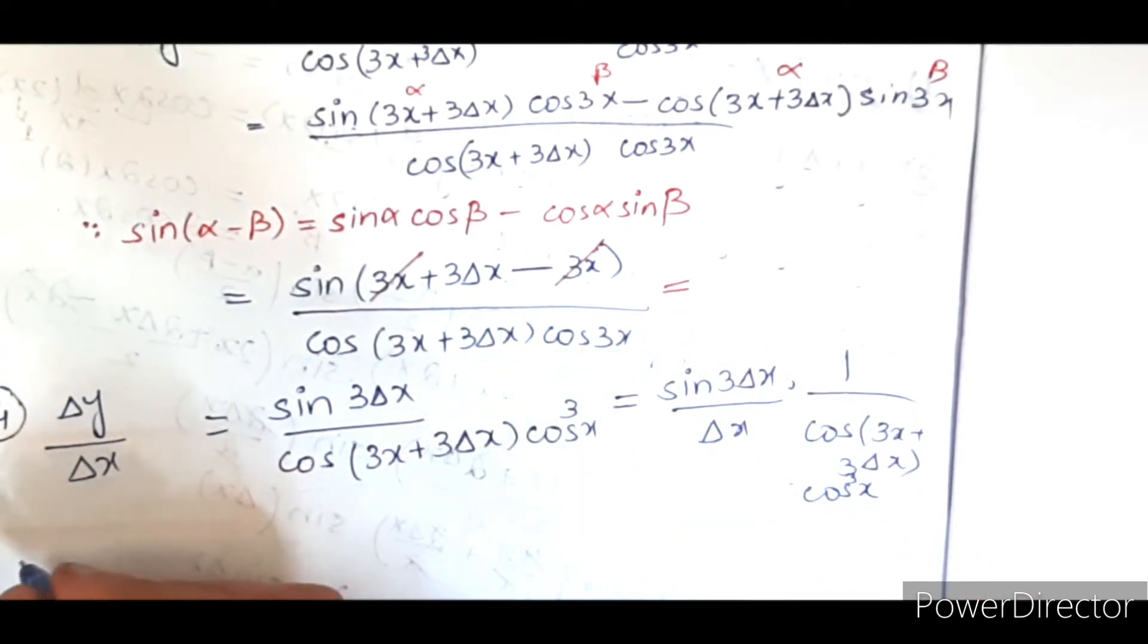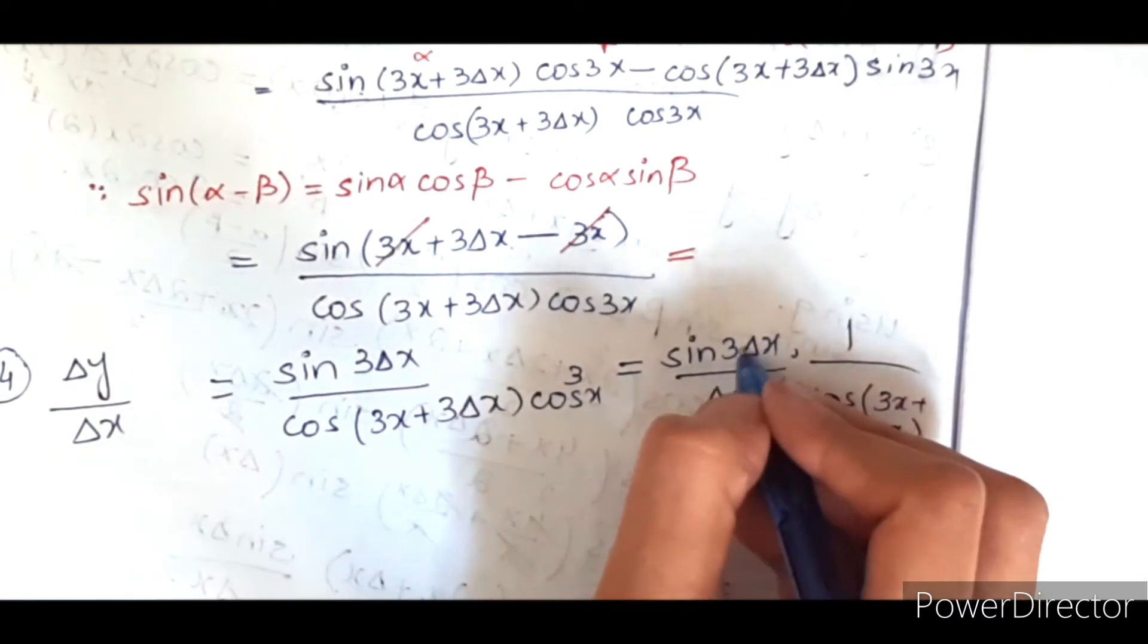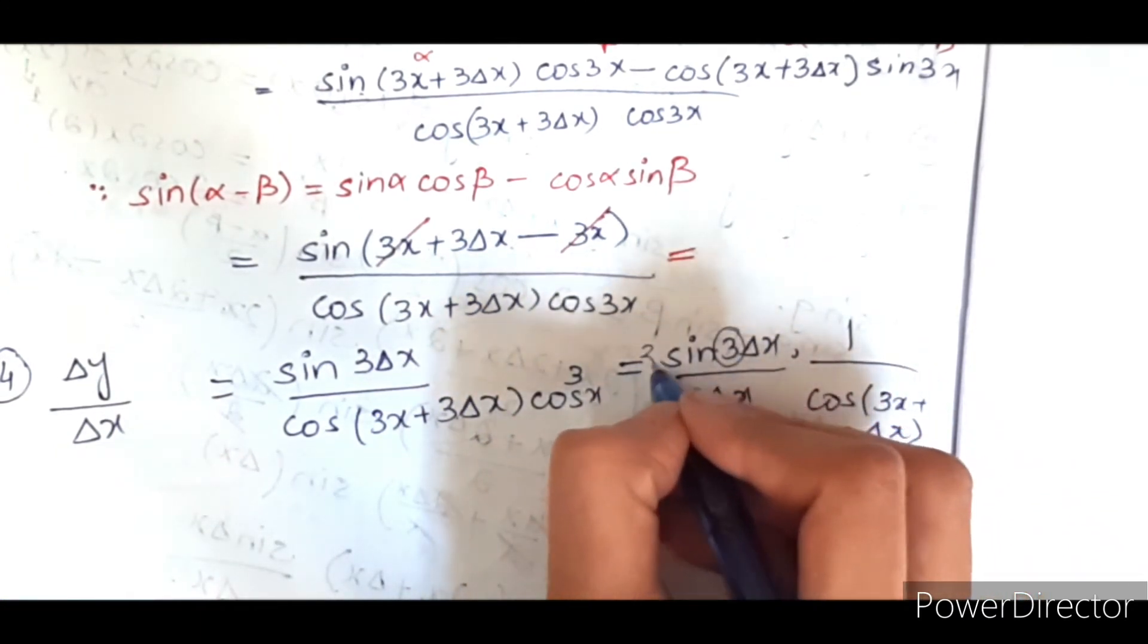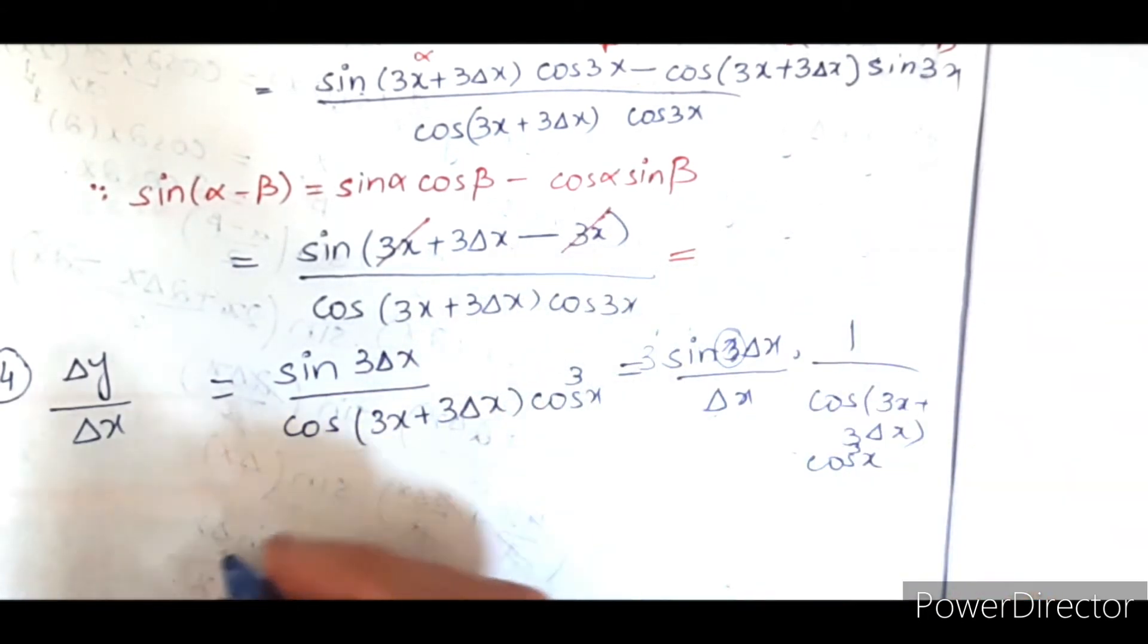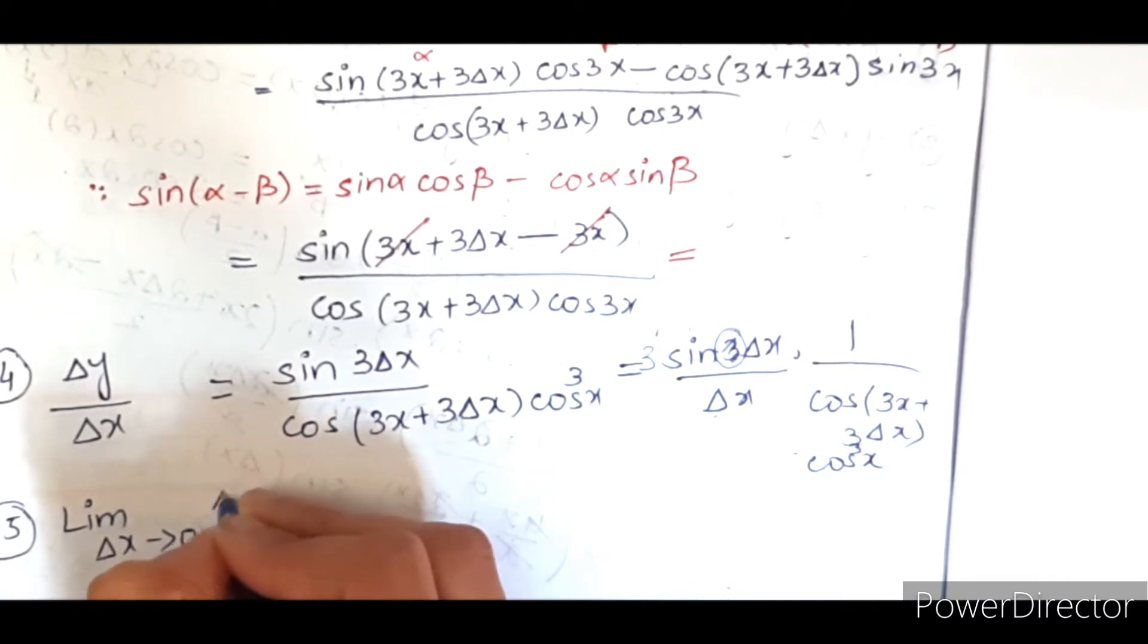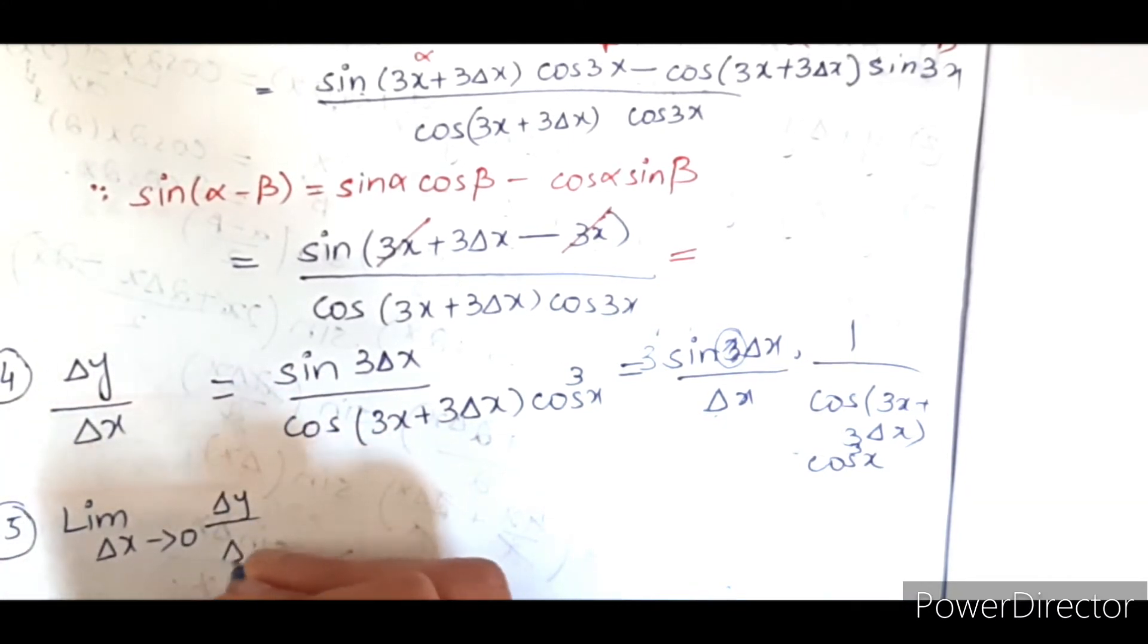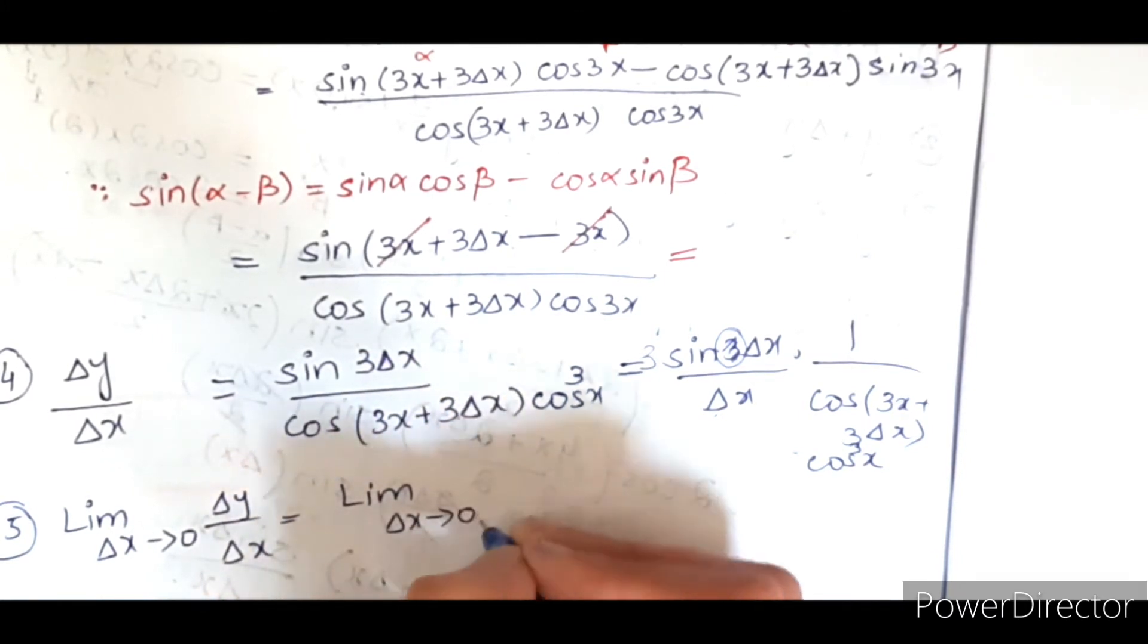So applying limit. We can also take out the 3 here, and then this term will remain the same. The fifth step is to apply the limit on both sides: limit del x approaches to 0, del y over del x.